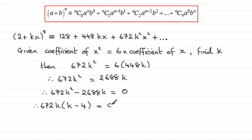So we end up with this factorized version, and therefore it can only be that k equals zero or the other factor k minus 4 equals zero.